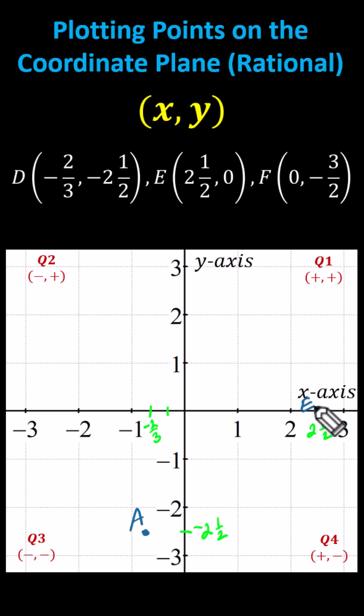Point F has coordinates zero comma negative three halves. Let's begin by locating negative three halves on the y-axis. Negative three halves equals negative one and a half. If we don't recognize this, we'll break the interval from zero to negative two on the y-axis into intervals of width one-half, putting tick marks in between. Now we can count by negative one-halves: negative one-half, negative two halves which is negative one, and then negative three halves.